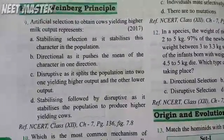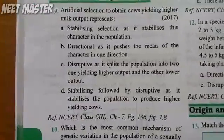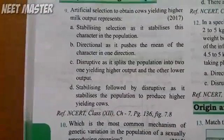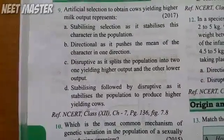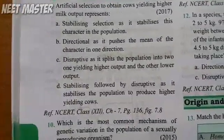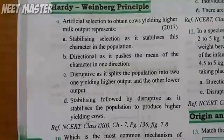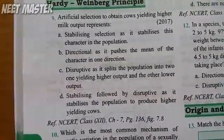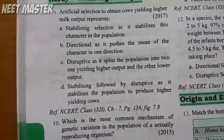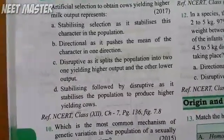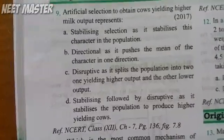Artificial selection to obtain cows yielding higher milk output is an example of: stabilizing selection, as it stabilizes this character in the population; directional, as it pushes the mean of the character in one direction; disruptive, which splits the population into one yielding higher output and the other lower output; or stabilizing followed by disruptive?